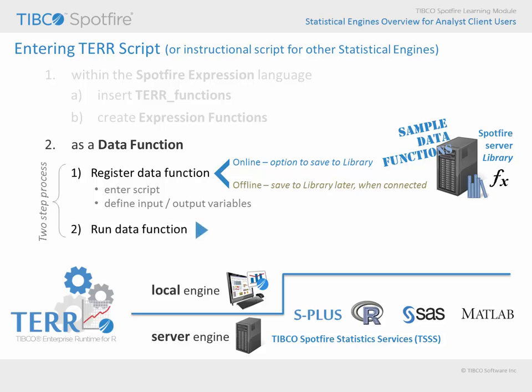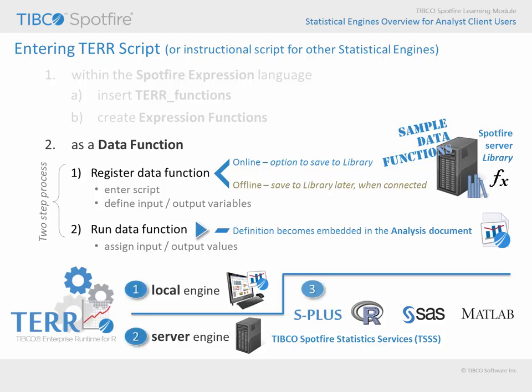Once you have the data function of interest defined, it's time to run the data function. The first time you run it, you will have to assign the input and output variables associated with your current analysis document — for example, which columns or property values will serve as input, and should the output be returned as a new column, a new data table, or a new property value? Once these parameters are mapped, the definition of the data function becomes embedded in the analysis document. Depending upon your online or offline status, you may be managing a copy of the data function definition in the library and in your analysis document. Running the data function also causes the instructional script to be processed on one of the indicated statistical engines.